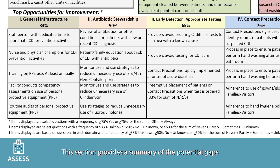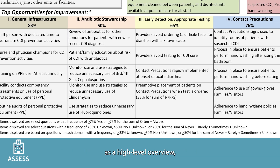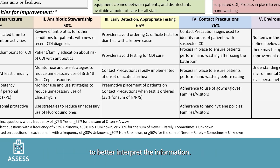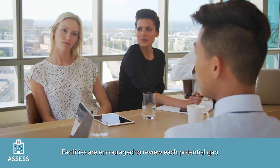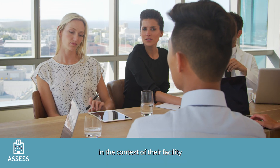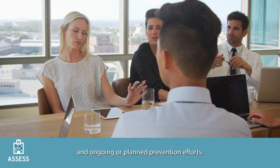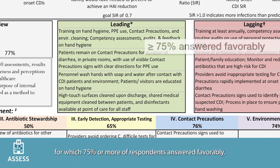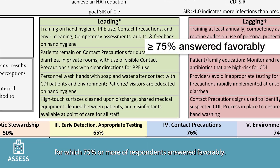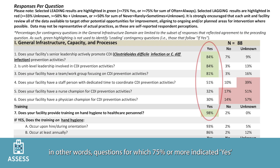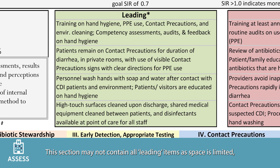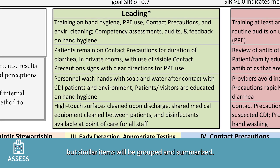This section provides a summary of the potential gaps as a high-level overview, but facilities can then review the individual response frequencies to better interpret the information. Facilities are encouraged to review each potential gap in the context of their facility and ongoing or planned prevention efforts. The leading section provides a summary of items for which 75% or more of respondents answered favorably — questions for which 75% or more indicated 'yes,' or the sum of 'often' and 'always.' Similar items will be grouped and summarized.